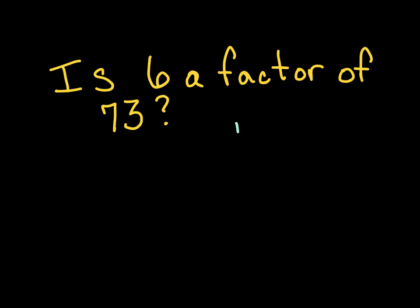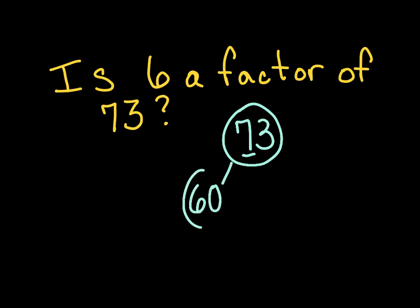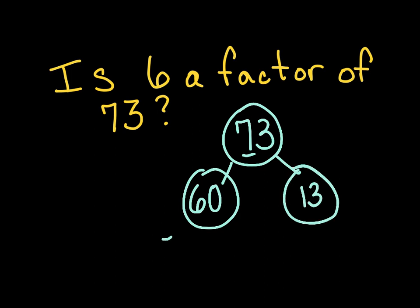Is 6 a factor of 73? Can 6 go into 70? No, but it can go into 60. 73 minus 60 gives us 13. 6 goes into 60 ten times. But does 6 go into 13? No, because 6 times 2 is 12 and there's nothing you can multiply 6 by to get 13. So 6 is not a factor of 73.